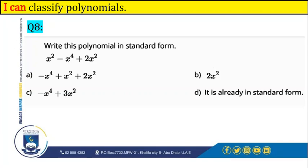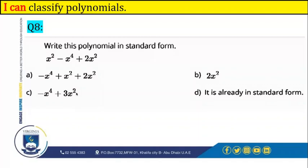Write this polynomial in standard form. When we write a polynomial in standard form, we put the highest degree first, from greatest to lowest. The highest degree in this polynomial is 4, so the leading term of the standard form is negative x to the power of 4. Then it's going to be plus x to the power of 2, plus 2x to the power of 2. Since these x's have the same power, we add those terms together to get negative x to the power of 4 plus 3x to the power of 2. So it's answer choice C.